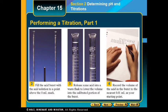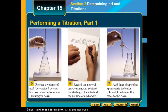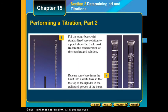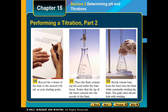Step 4: Record the volume of acid in the burette to the nearest one-hundredth of a milliliter. Step 5: Release the specified volume of acid into a clean Erlenmeyer flask. Step 6: Record your new volume and subtract the starting volume to find the volume of acid added. Step 7: Add three drops of the appropriate indicator — in this example, phenolphthalein, a clear indicator that will turn pink. Step 8: Fill the other burette with standardized base solution and record it. Steps 9 and 10: Release some base into a waste flask and record the volume to the nearest one-hundredth of a milliliter.